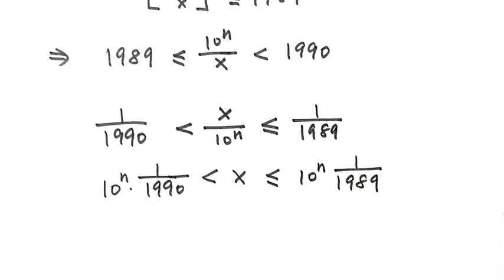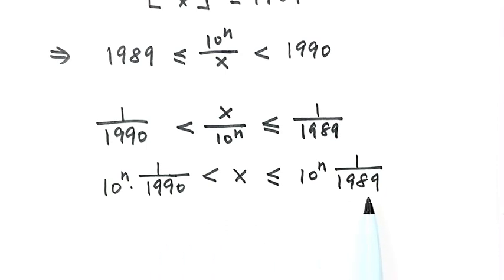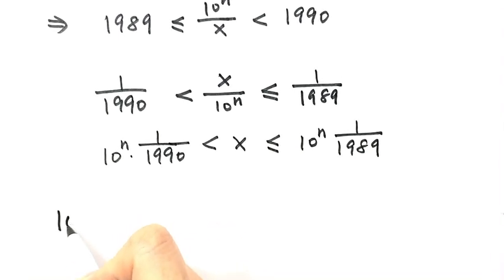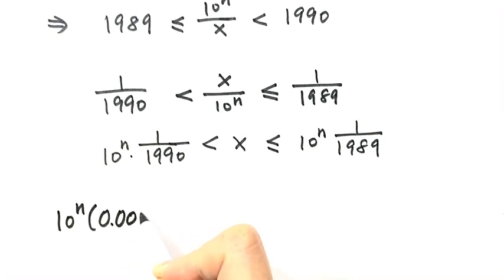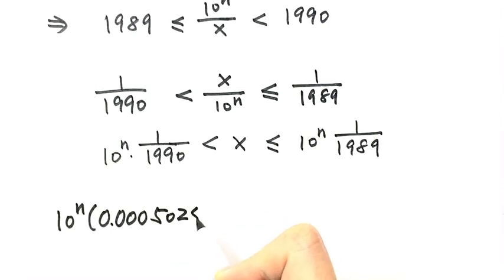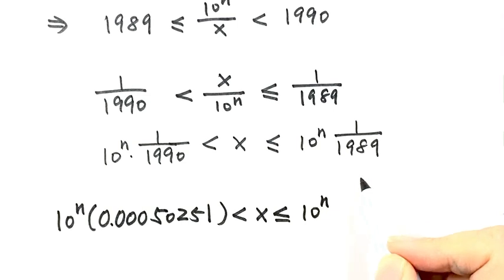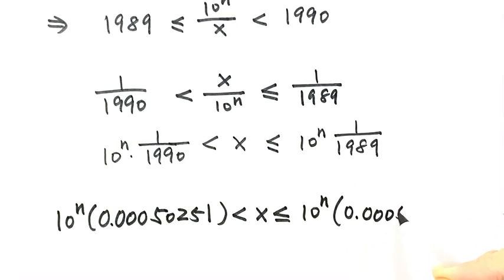Next, we convert the two fractions to decimals, keeping eight decimal places. So the bounds become 10 to the power n multiplied by those decimal values — keeping eight decimal places on each side — with x in the middle.